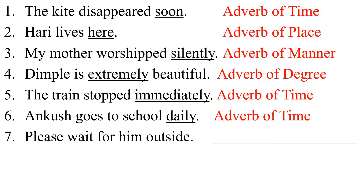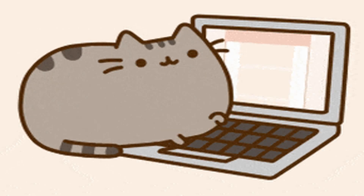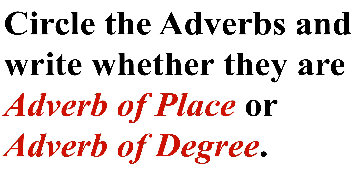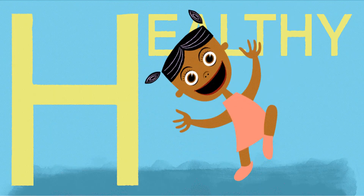The last sentence is: please wait for him outside. Here the word 'outside' shows place. If you make the question using 'where', the answer you will get is 'outside', which clears that it is Adverb of Place. After completing this, we will move forward towards our homework. The question is: circle the Adverbs and write whether they are Adverb of Place or Adverb of Degree. So complete your homework and learn it well. Bye.